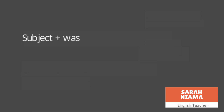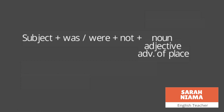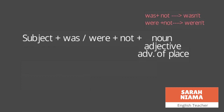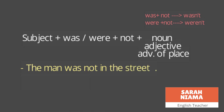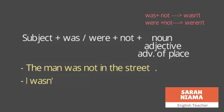To negate these sentences, we add 'not' to 'was' or 'were'. The rule is: subject plus 'was/were' plus 'not' plus noun, adjective, or adverb. We can abbreviate 'was not' to 'wasn't' and 'were not' to 'weren't'. Example: 'The man was not in the street' — 'was not' is the negative, 'in the street' is the adverb of place. 'I wasn't active' — abbreviated form, 'active' is the adjective.